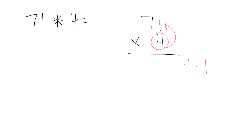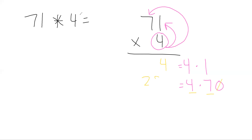Like with the area model, I'll write all the problems down first, then solve. So first we do 4 times 1, then I take my 4 and multiply it by the 7 — but remember, it's not just a 7, it's a 7 in the tens place, so it's actually 70. Four times 1 is 4, and 4 times 70 is 280. Adding gives us 284 — so 71 times 4 is 284.